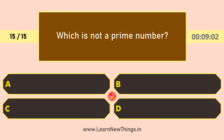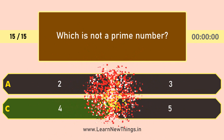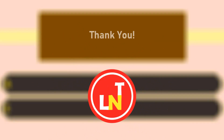Which is not a prime number? The options include 4, 5, 6, 7, 8, 9, 10, 15. The answer is 4, as it is not a prime number.